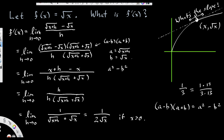Now the bottom is defined as long as x is positive. As h approaches 0, √(x+h) approaches √x. So this equals 1 divided by (√x + √x), which is 1 divided by 2√x. This is valid if x is greater than 0. If x equals 0 we'd have 1 over 0 (undefined), and if x is less than 0 we'd have square roots of negative numbers. So f prime of x equals 1 over 2√x, which may also be written as one half times x to the negative one half power.